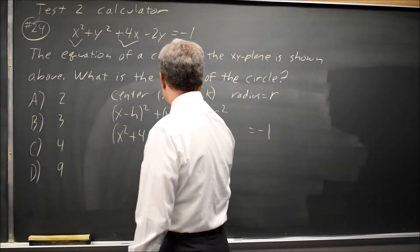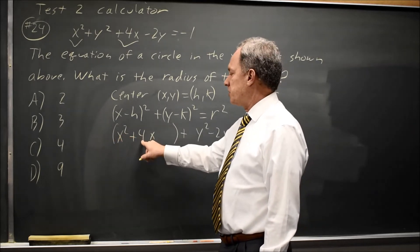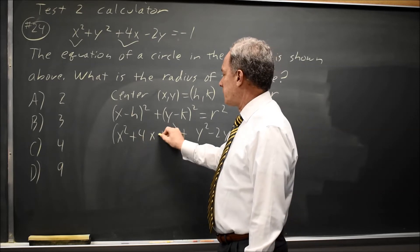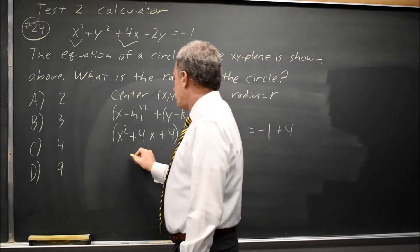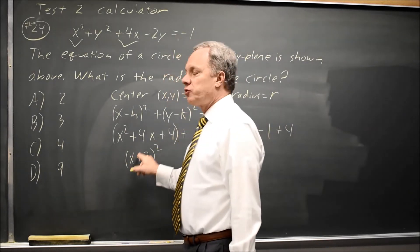Now, to make the x squared plus 4x a perfect square, since the leading coefficient is a 1, I can take half of the x coefficient. Half of 4 is 2 squared up, and I add 4. Since I added 4 on the left, I'll add 4 on the right, and this will now be x plus 2 quantity squared. If you check that with FOIL, it matches.